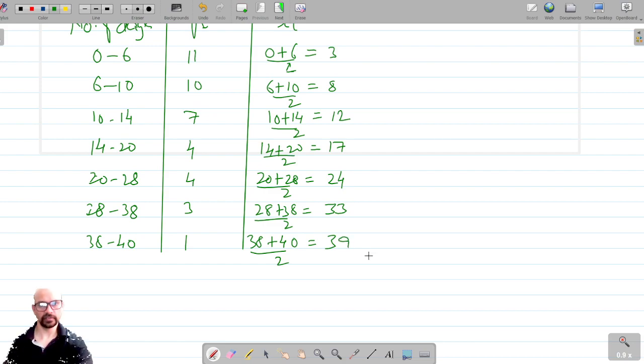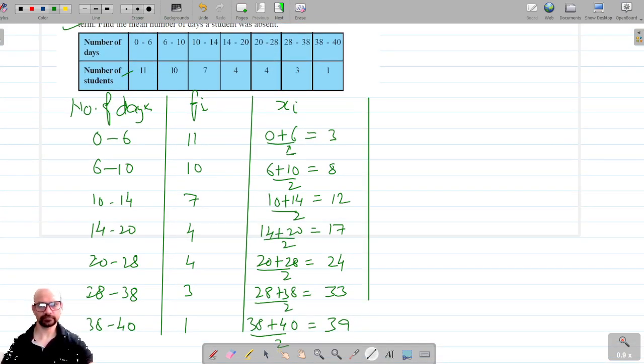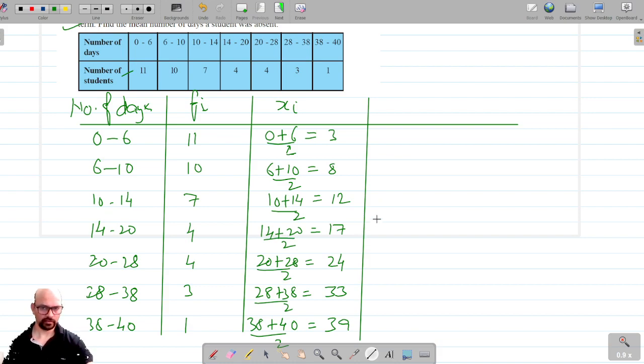Now we are going to use the direct method here. There is a reason: because if you see, the class size is not the same.